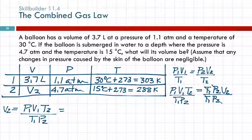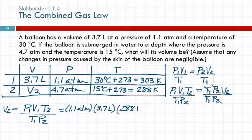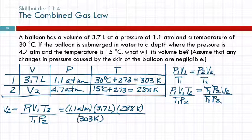So, P1, 1.1 atmospheres. V1, 3.7 liters. T2, 288 Kelvin. Divided by the first temperature, 303 Kelvin. And the second pressure, 4.7 atmospheres. Look at the units. Atmospheres cancel atmospheres. Kelvins cancel Kelvins. If your units don't cancel out, then go back and look at your equation. Check that you copied it correctly and all that stuff because there's probably a mistake somewhere.